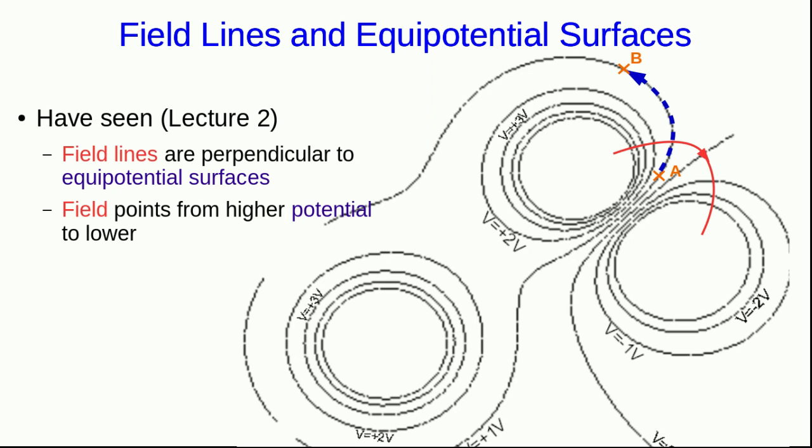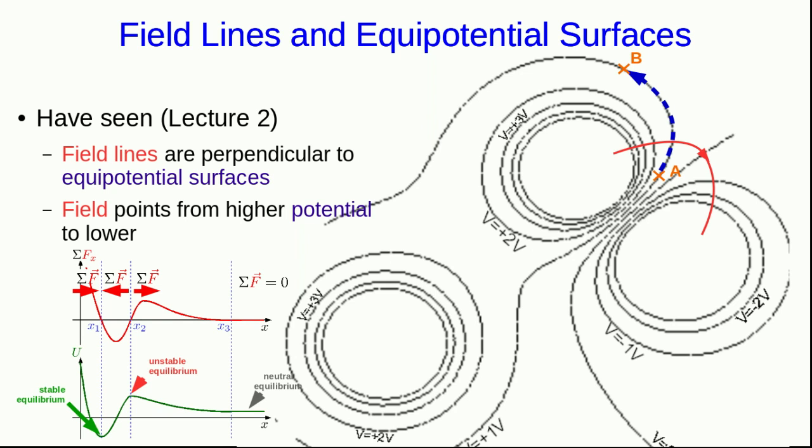Also, a positive probe charge must be speeding up as it moves from high potential to low potential, because it's losing potential energy, and so the field must point from high potential to low potential. This is actually something we saw way back in PHYS 1104, because there we saw that for non-dissipative forces, the force always points from locations of high potential energy to locations of low potential energy.